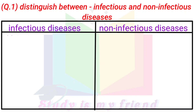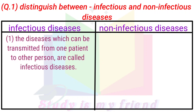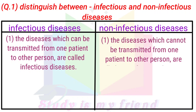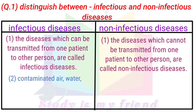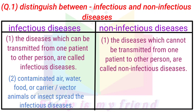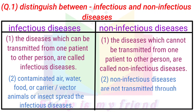Infectious Diseases: The diseases which can be transmitted from one patient to another person are called infectious diseases. Non-Infectious Diseases: The diseases which cannot be transmitted from one patient to another person are called non-infectious diseases. Contaminated air, water, food, or carrier vector animals or insects spread the infectious diseases, whereas non-infectious diseases are not transmitted through any medium.